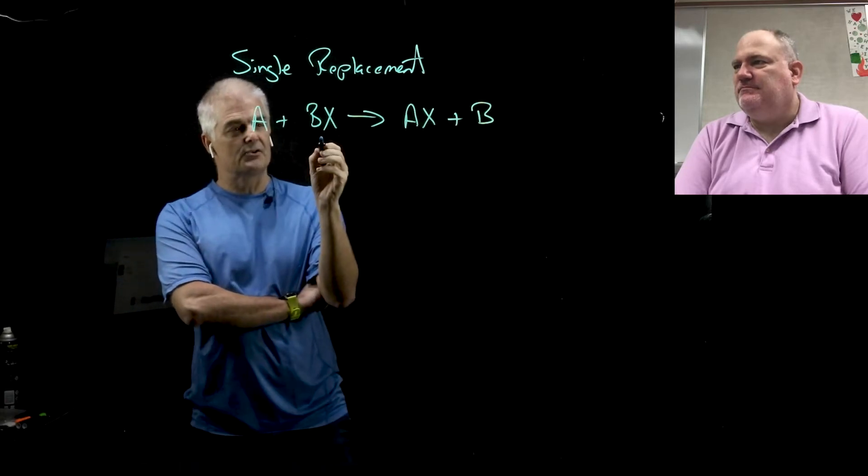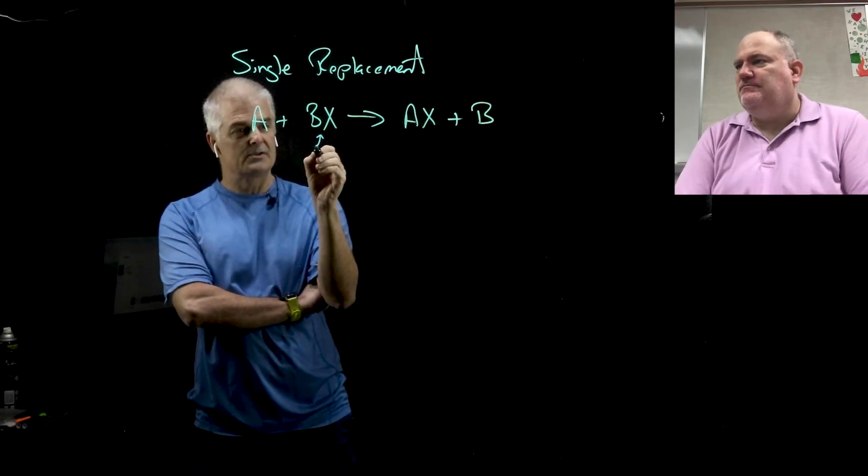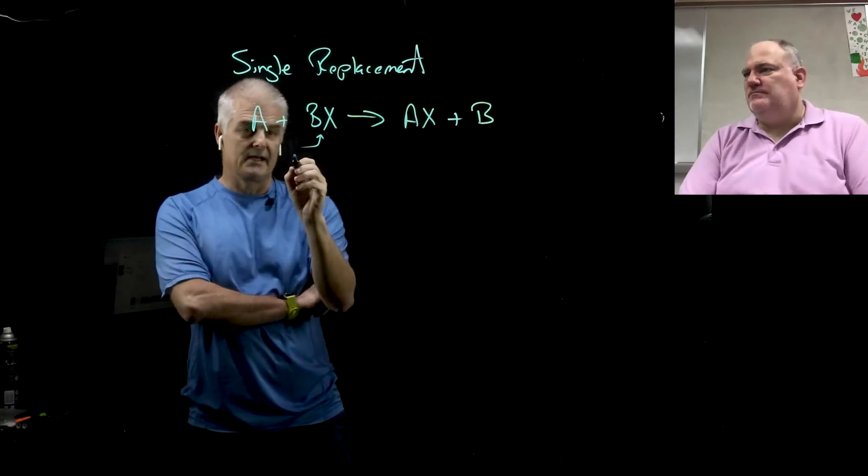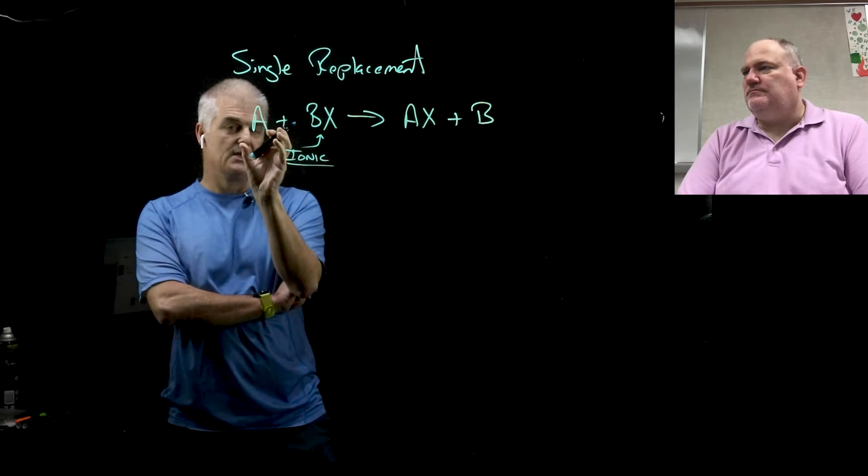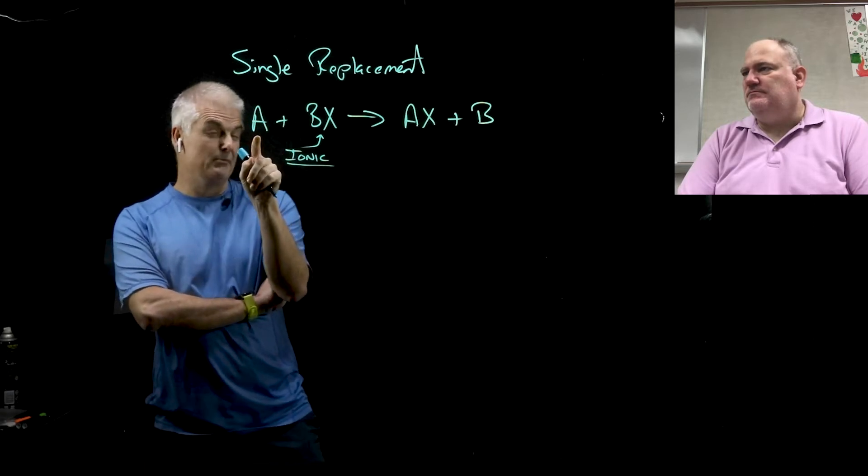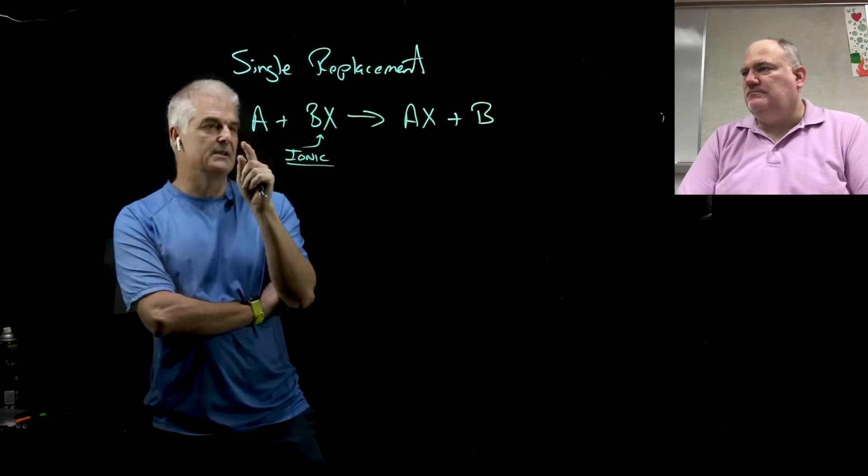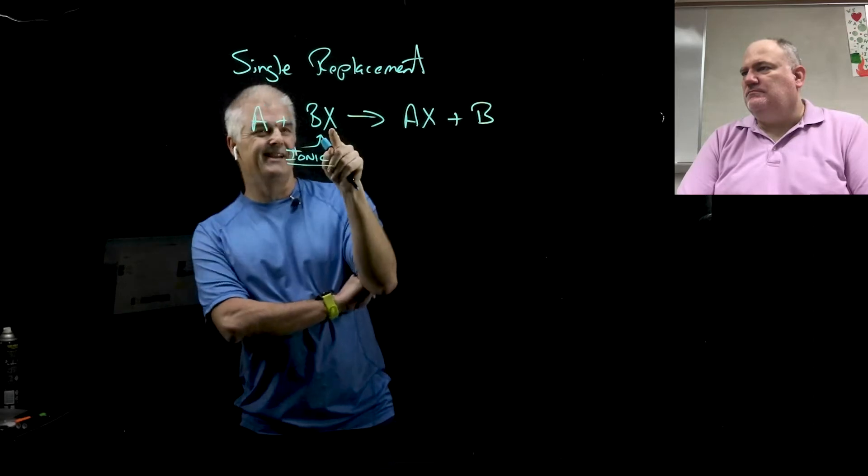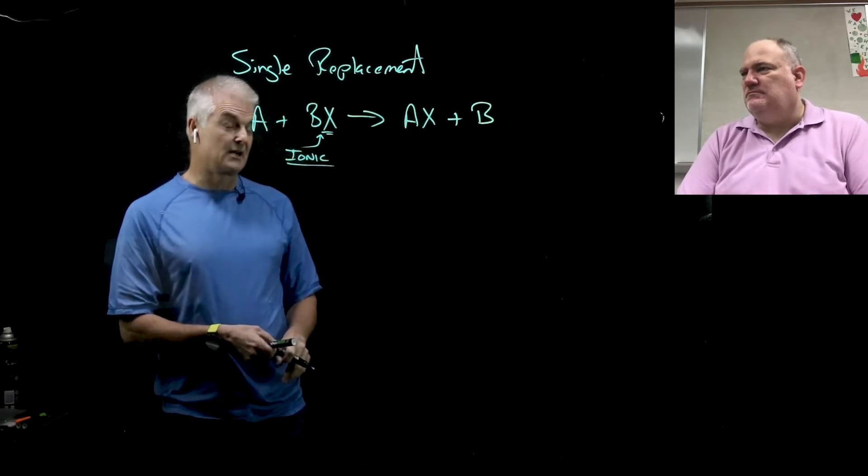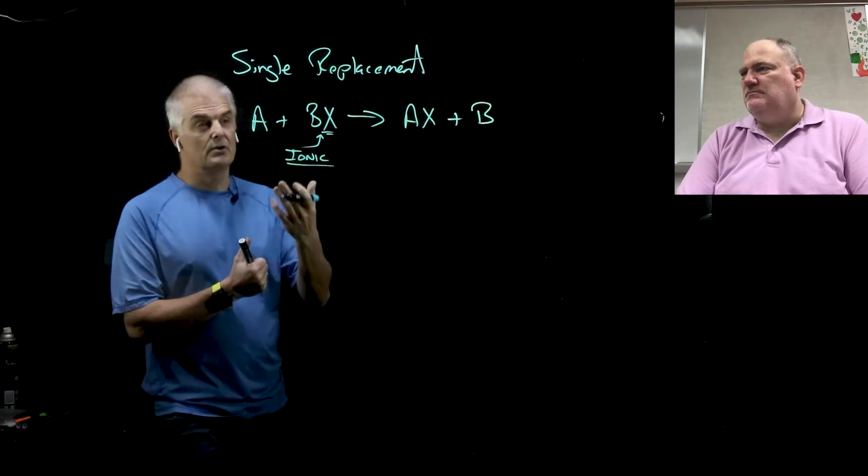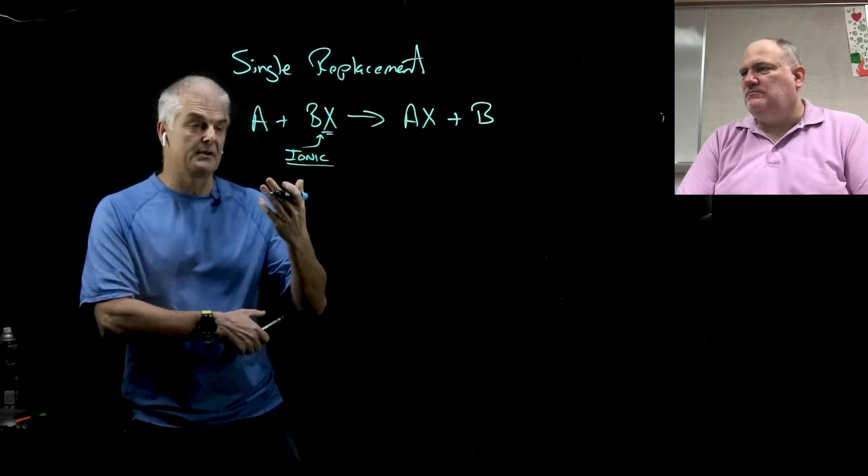Kicked to the curb. So it's a single replacement. Now as a note, folks, what I also want you to jot down that this is always going to be the BX or the AX is going to be some kind of an ionic compound, right? So metal bonded to nonmetal. And this could be either A could either be a metal, usually a metal. Sometimes it could be a nonmetal where actually the A takes the place of the nonmetal. But usually, as you recall, the non-metal in an ionic compound comes second.